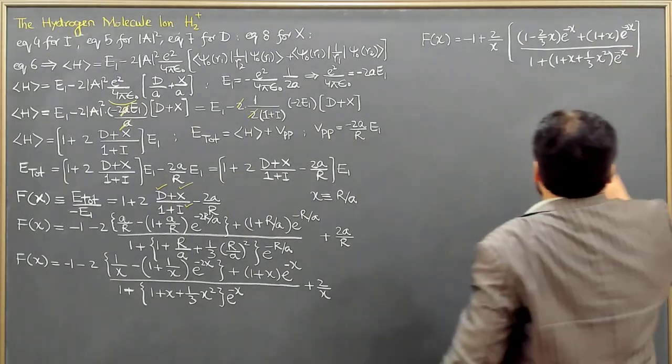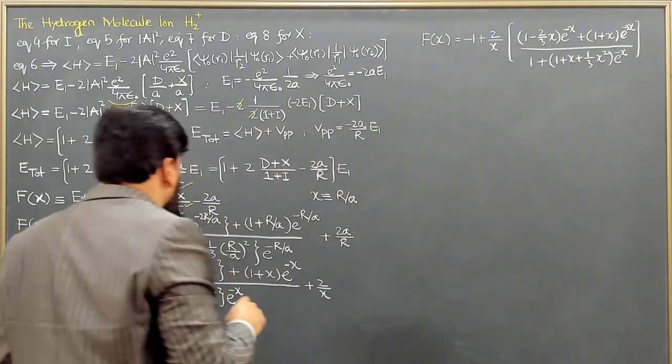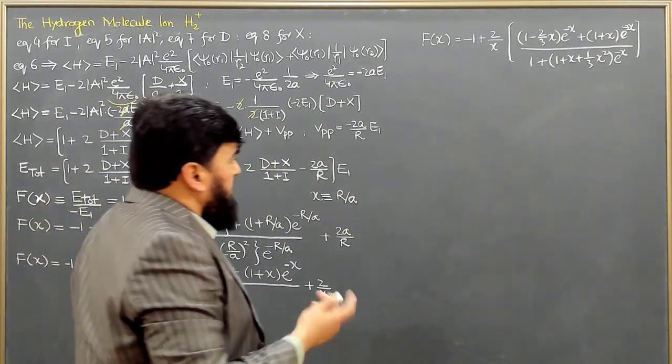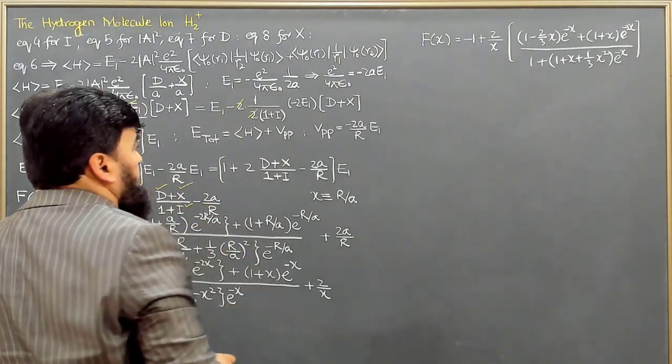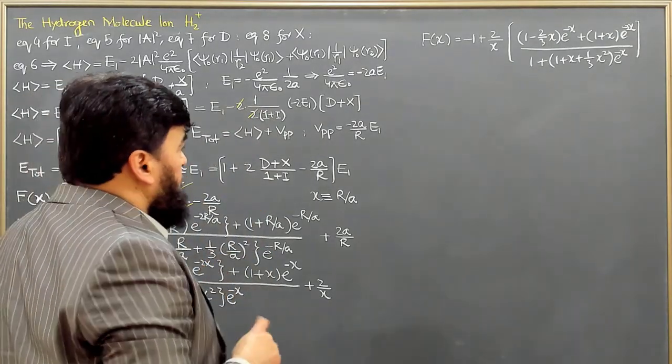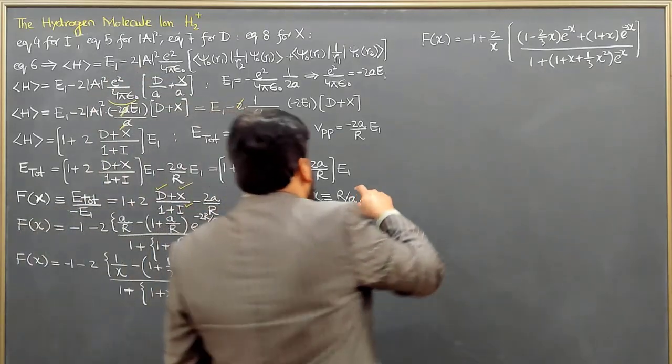So this is the final form that we are having. We are having very few steps simplification, and then we get this one. Now understand this one first: what is f of x?